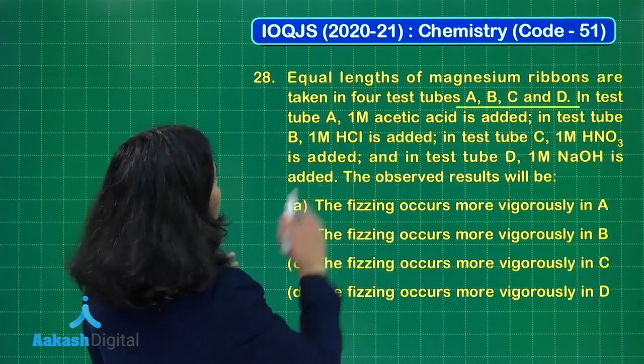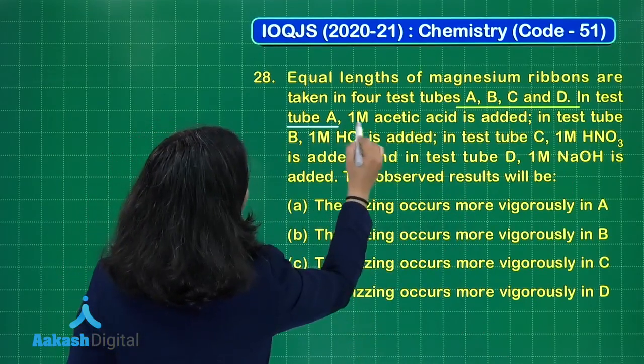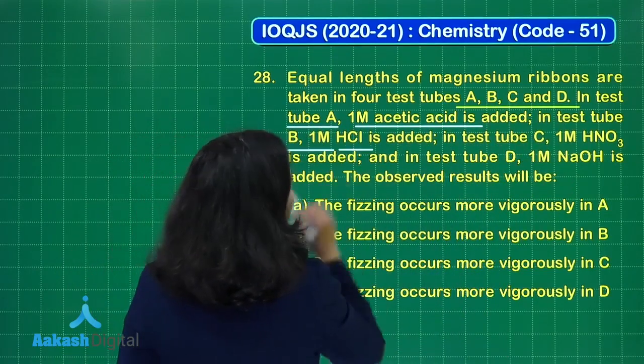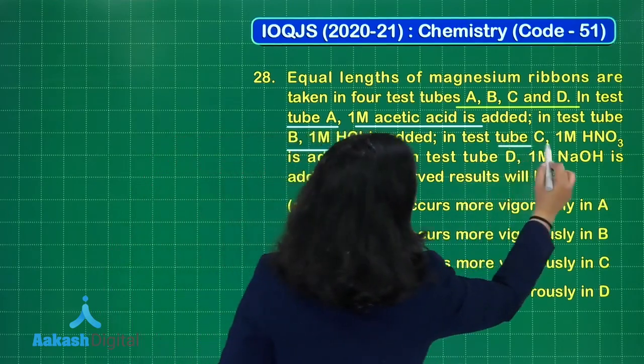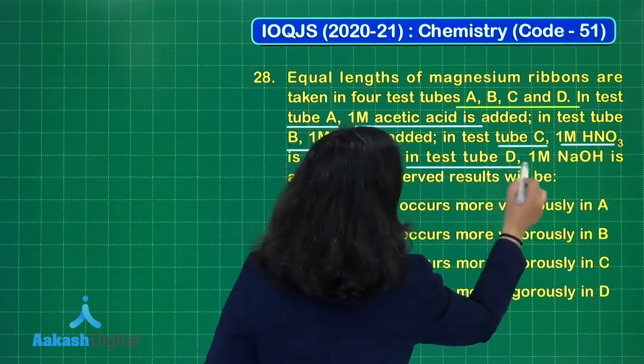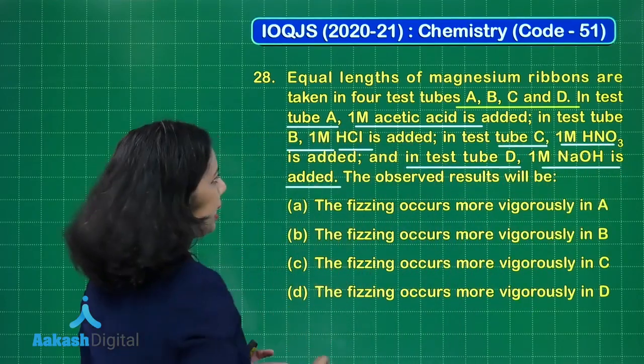Now in test tube A, 1M acetic acid is added. In test tube B, 1M HCl is added. In test tube C, 1M HNO3 is added, and in test tube D, 1M NaOH is added.